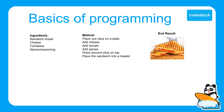Let's say that we want to make a toasted cheese and tomato sandwich. The first thing that you are going to need are some ingredients: sandwich bread, cheese, some tomatoes, maybe some spices. Once you have all of these ingredients in place, you then need a method of how to actually assemble your toasted cheese and tomato sandwich. So the first thing you will do is place one slice of bread on a plate, then add some cheese, then some slices of tomato, then some spices, and then add the second slice of bread on top to finish off your sandwich. The last thing you would do is place the sandwich on a toaster. Your end result would be a beautifully toasted cheese and tomato sandwich.